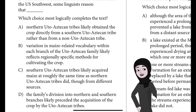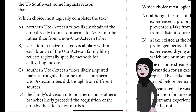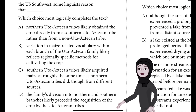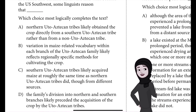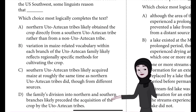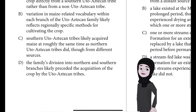Which choice most logically completes the text? Is it A: Northern Uto-Aztecan tribes likely obtained the crop directly from a southern Uto-Aztecan tribe rather than from a non-Uto-Aztecan tribe? Or B: Variation in maize-related vocabulary within each branch of the Uto-Aztecan family likely reflects regionally specific methods for cultivating the crop?